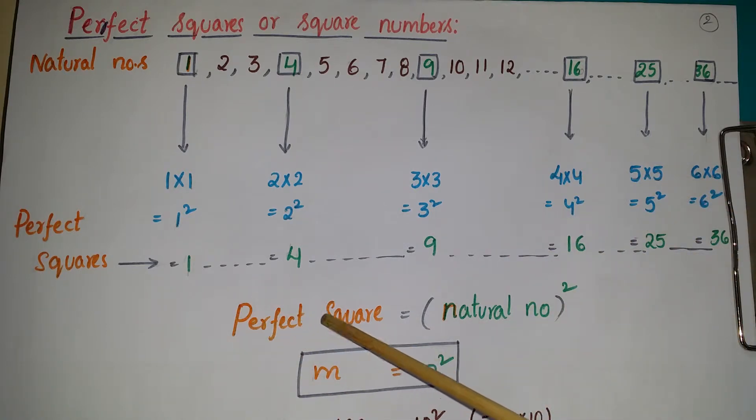Perfect square is a number which we can write as a square of a natural number. So perfect square is equal to natural number whole square. If we say perfect square as m, then m is equal to n square.